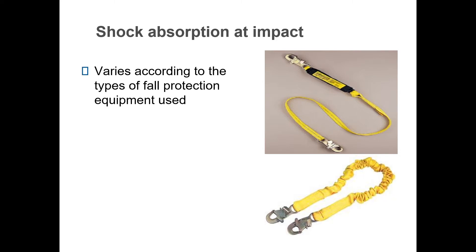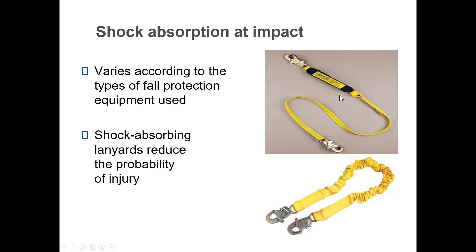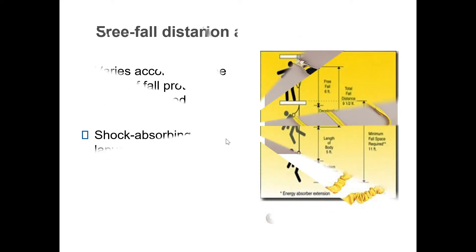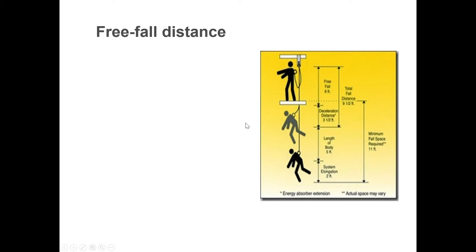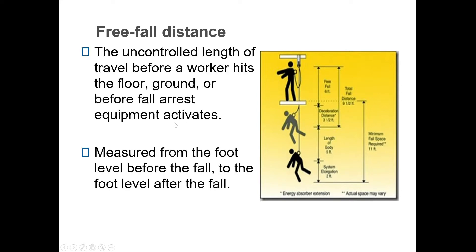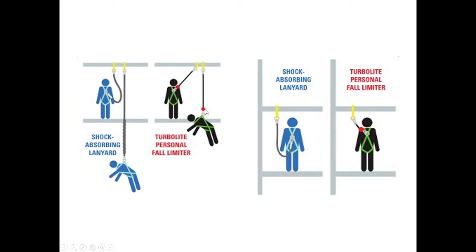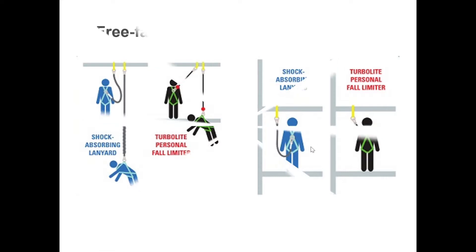Shock-absorbing lanyards are the older method, but self-retracting lifelines (SRLs) are becoming the standard. Lanyards require you to fall the full distance before they arrest you, and you can't rescue yourself. A self-retracting lifeline stops you quickly — like a seat belt mechanism — and the person can still potentially rescue themselves. Lanyards can also be tripped over; SRLs keep the line up and out of your way, though they are heavier and bulkier.